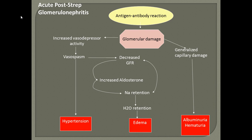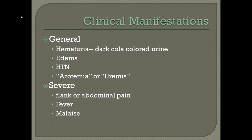The major signs of acute glomerulonephritis are hypertension, edema, albuminuria, and hematuria. Chronic glomerulonephritis is also associated with hypertension, and the terms azotemia or uremia are used in the setting of high BUNs. Severe AGN is characterized by flank or abdominal pain, fever, and malaise. The fever stems from the underlying strep infection.